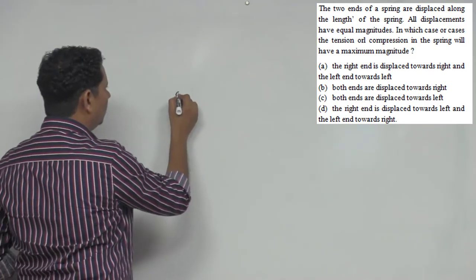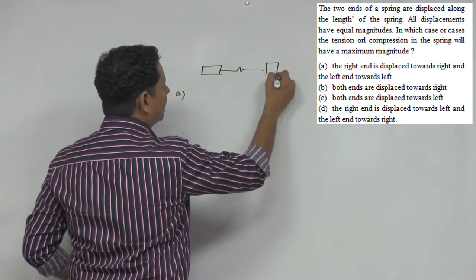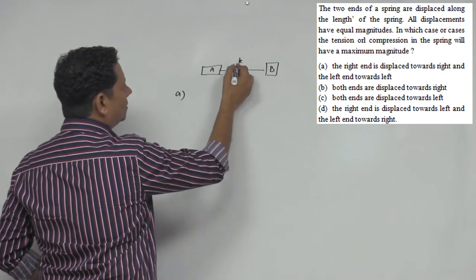So we have two blocks attached to the spring. Let's call this block A and this block B. The spring constant, let's say, is K.